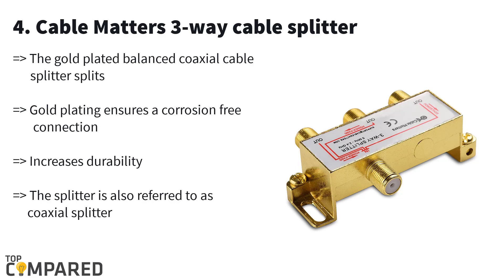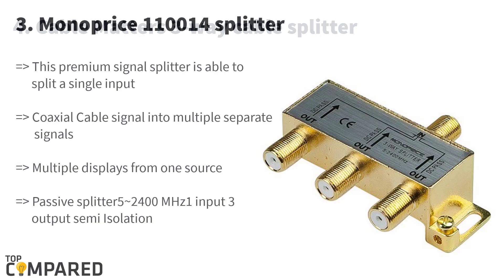Fourth in the list is the Cable Matters three-way cable splitter. This gold-plated cable splitter offers a speed of 2.5 gigahertz, and the gold plating increases the life of the splitter. It also ensures a smooth and uninterrupted cable connection. Besides being corrosion-free, the zinc cast reduces insertion losses while connecting satellite sources to the television or even to the computer.